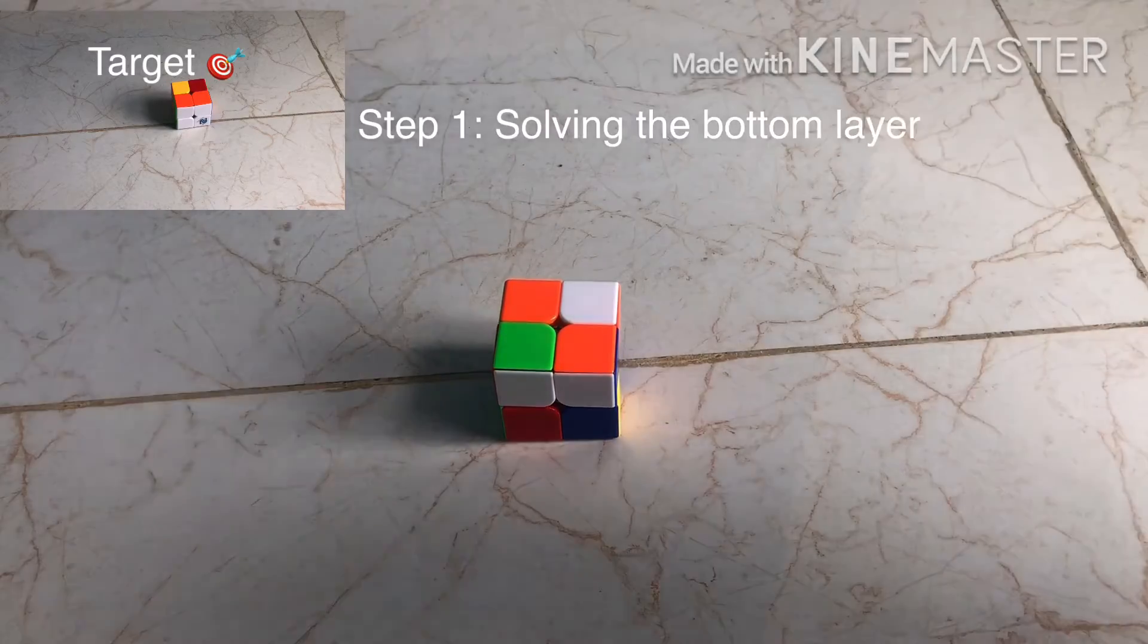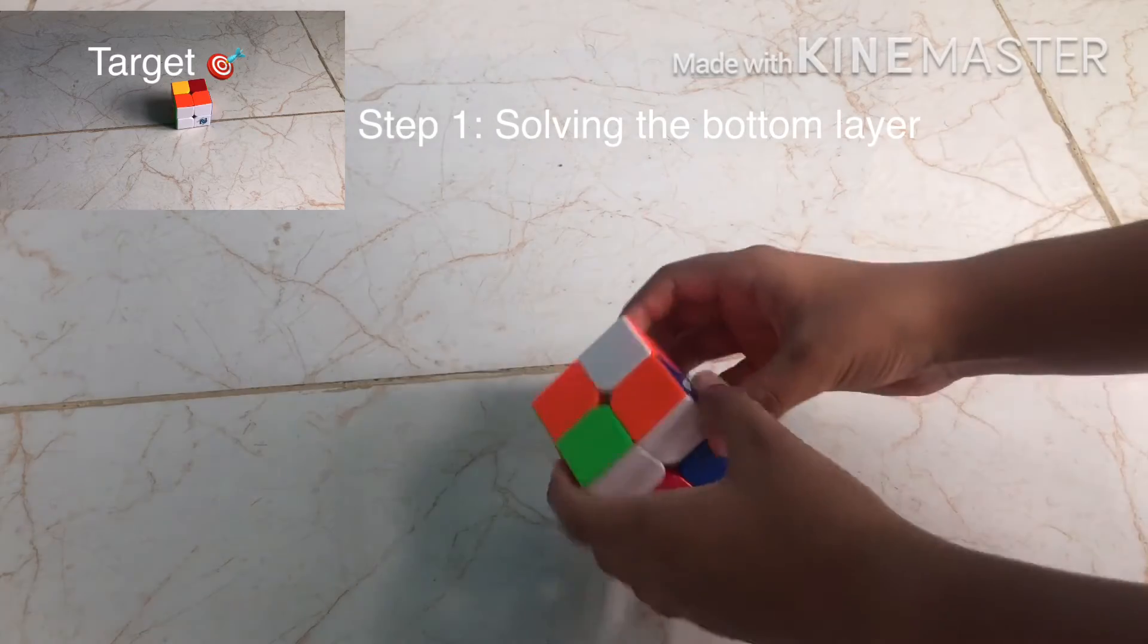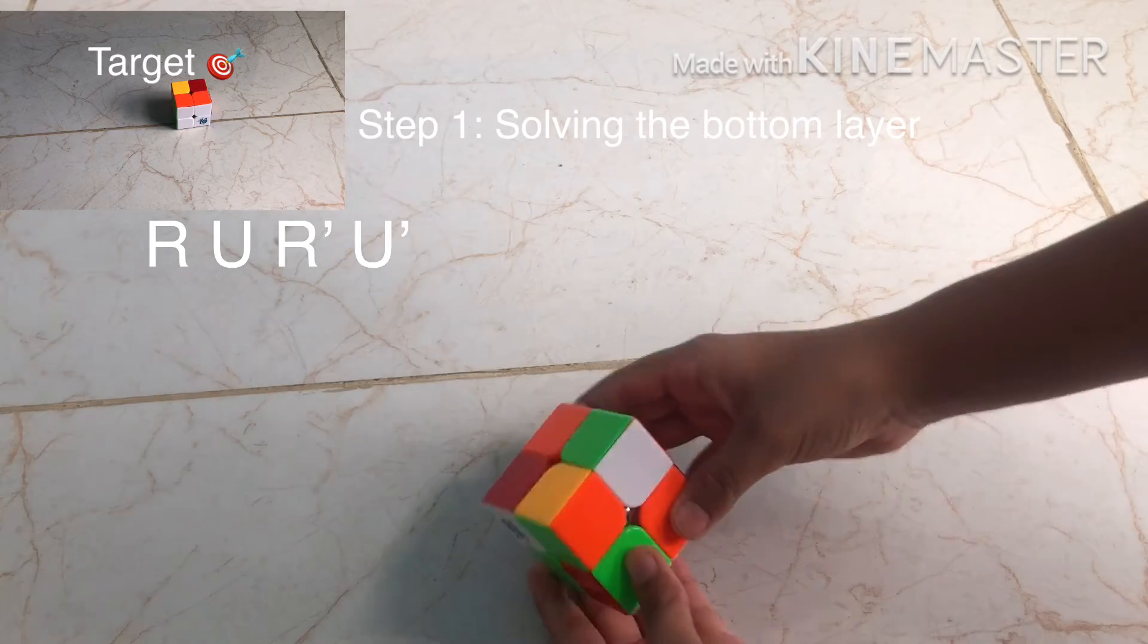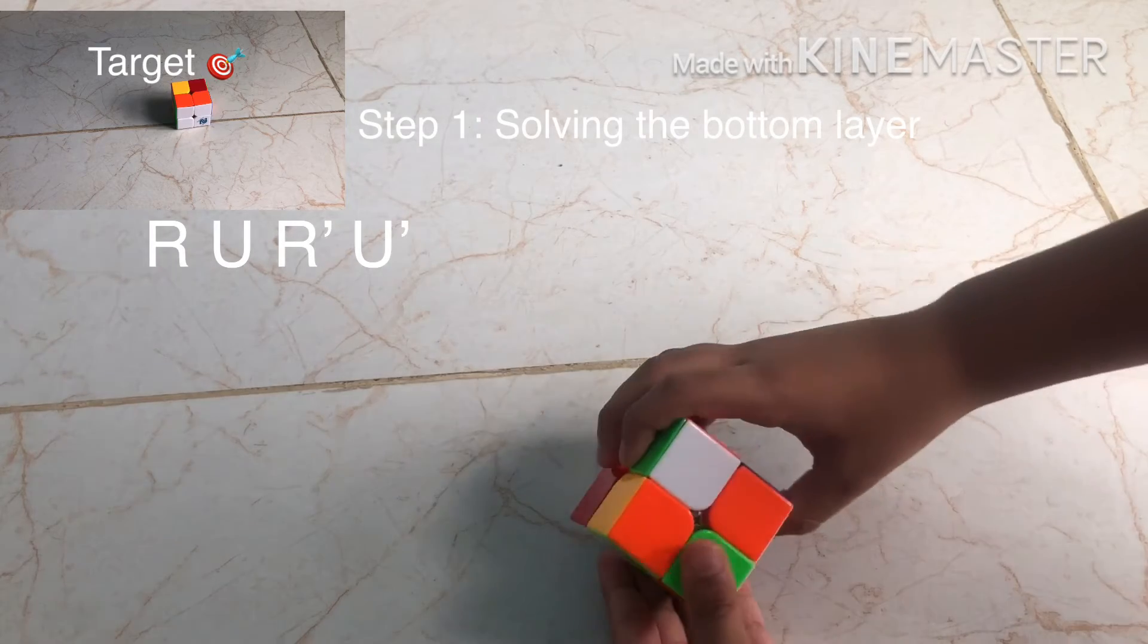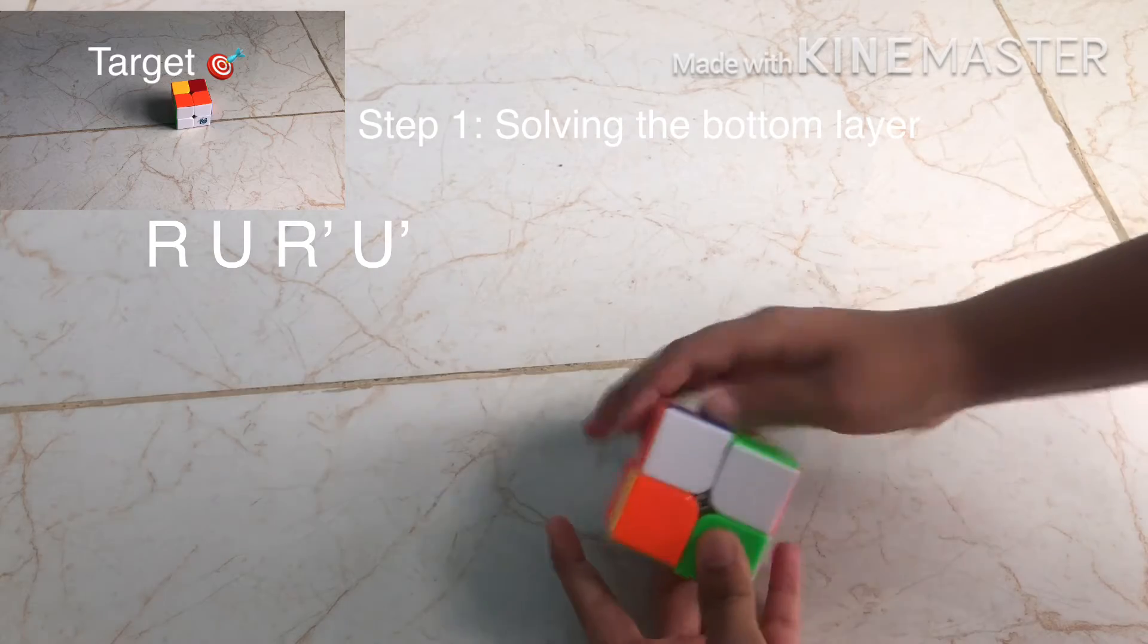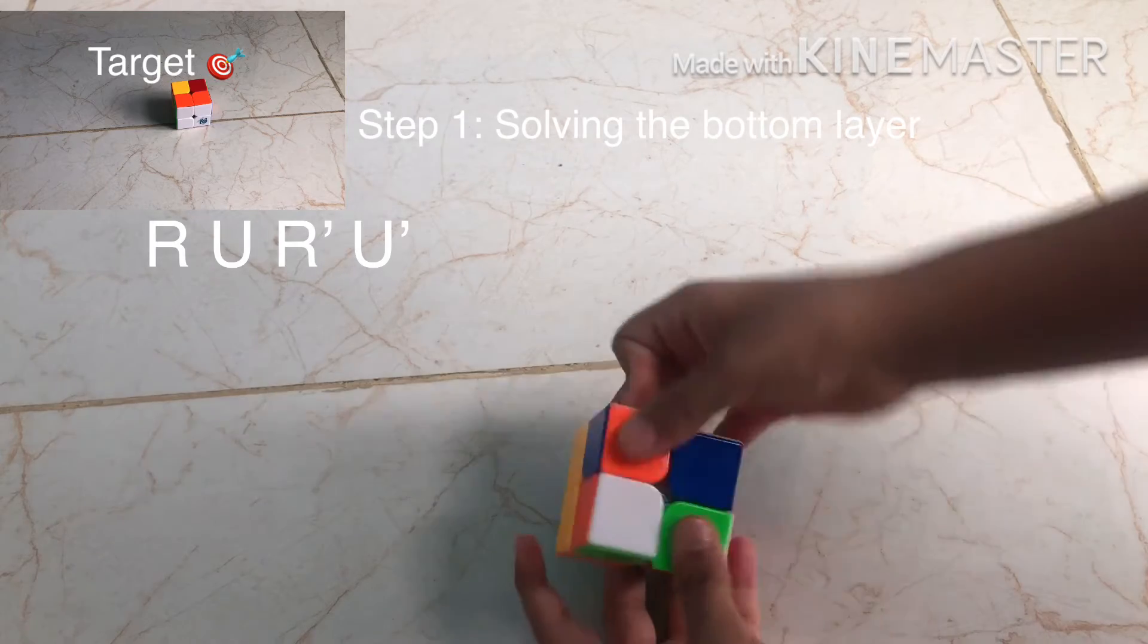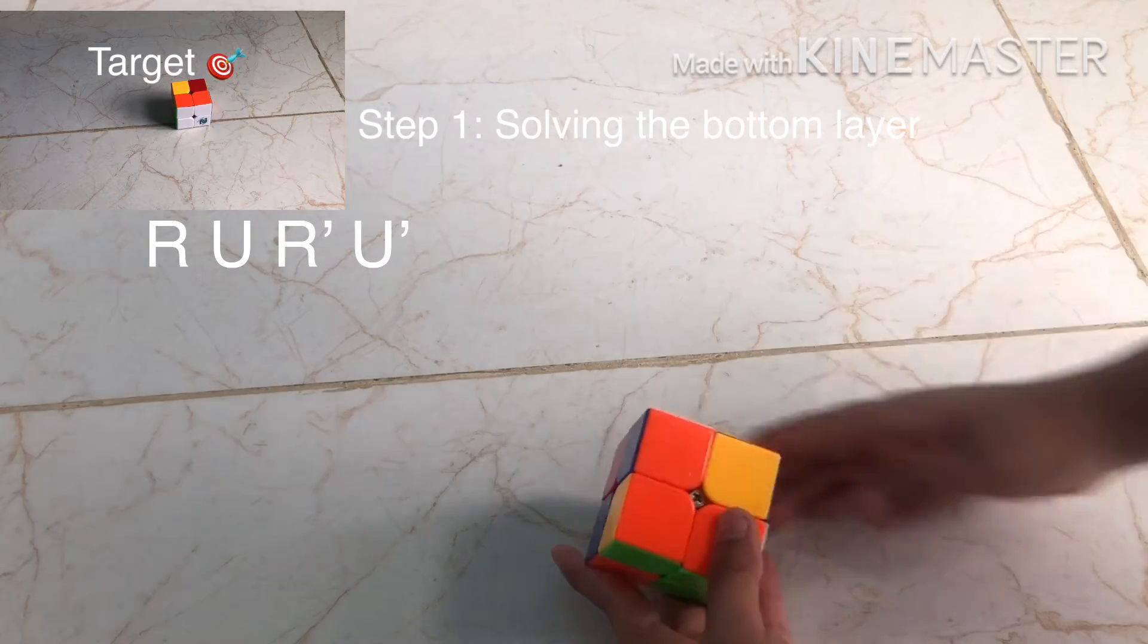So now, the first step. Solving the right side with the bottom layer solved. So here's where you use that R, U, R apostrophe method. Align the corners with rotating the top layer. And then, use this algorithm. R, U, R apostrophe, U apostrophe. And keep doing it until you get the corners placed with your other corners.